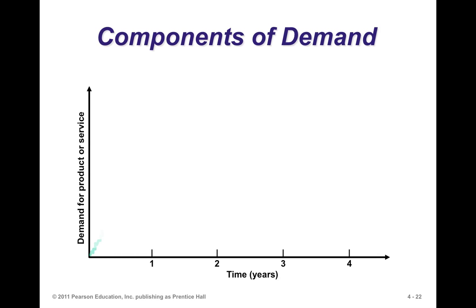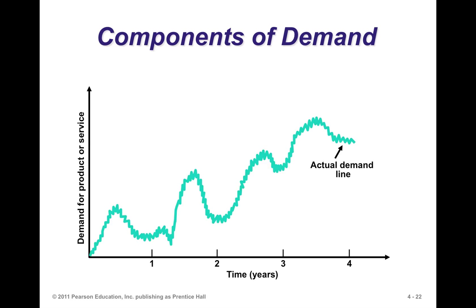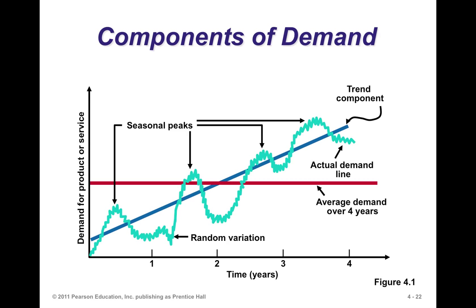Trend is a general steady upward or downward movement over time. The seasonal component refers to periodic patterns within a year — for example, if you take week-by-week demand, you see variation during the week and the cycle repeats itself: Monday demands look similar, Tuesday demands look similar, and so on. You'll see a similar profile from week to week, or it could be quarterly — first quarters look alike, second quarters look alike, and so forth.